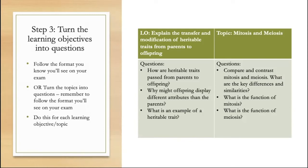Here's an example of how I might do this for this specific exam. If the learning objective is 'explain the transfer and modification of heritable traits from parents to offspring,' I might write questions like: How are heritable traits passed from parents to offspring? Why might offspring display different attributes than the parents? What is an example of a heritable trait? Or if I only have the topic — for example, mitosis and meiosis — I might write: Compare and contrast mitosis and meiosis. What are the key differences and similarities? What is the function of mitosis? What is the function of meiosis? What are the steps of each process? These are things that I'm predicting would show up on this exam.